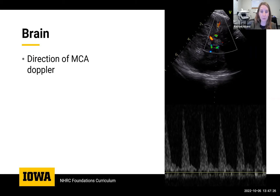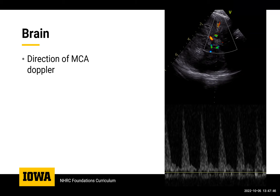In the brain, we're trying to look at the direction of the MCA. We also do a full screening head ultrasound on all premature babies on their first scans and check again if there's something to follow up. For every single scan, we do all of these flow Dopplers. In this example, the flow in the MCA is forward.